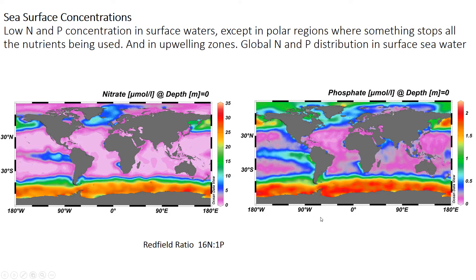The spatial patterns of nitrogen and phosphorus look very similar because large parts of the ocean are removing nutrients, so concentrations are very low wherever life occurs. Nutrients might be added in some places along coastlines — there's a little bloom of nutrients coming out from the Amazon River, for example. But in other places there are high nutrients, being added by other processes such as upwelling.